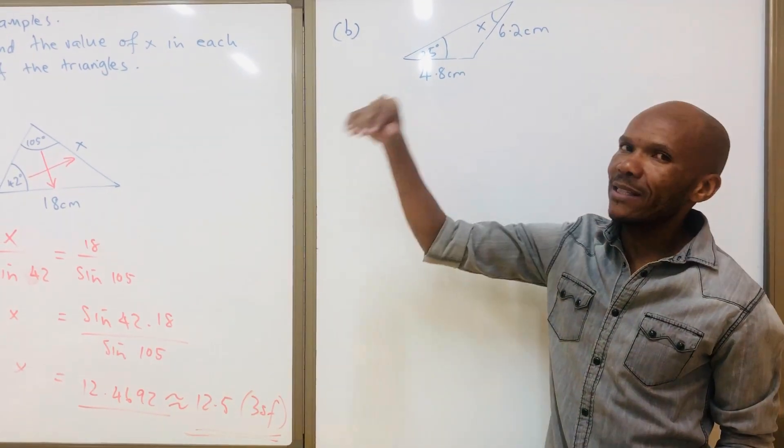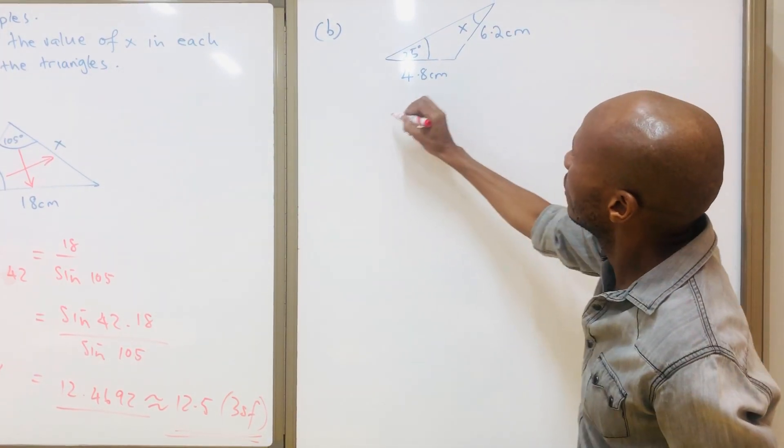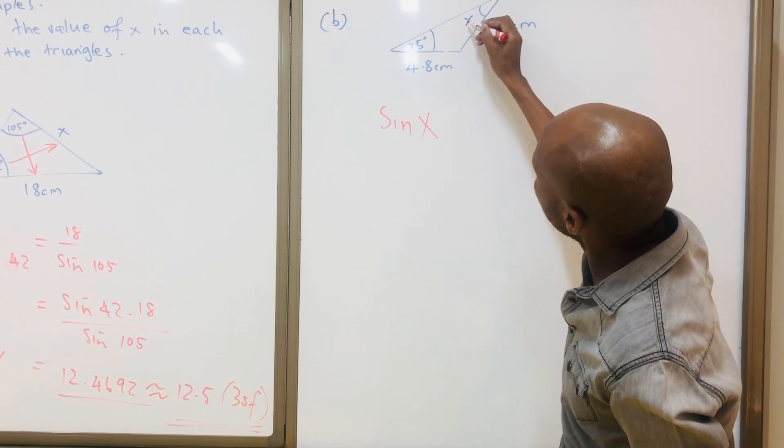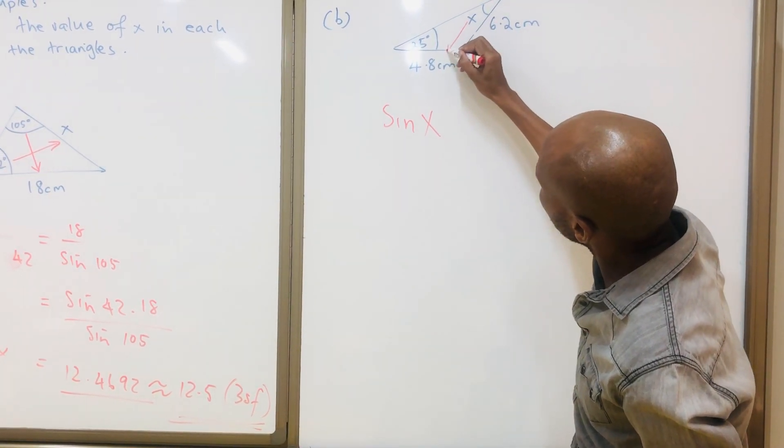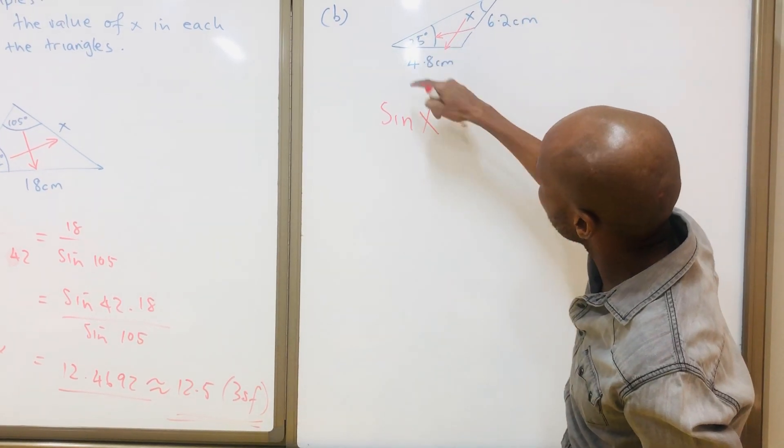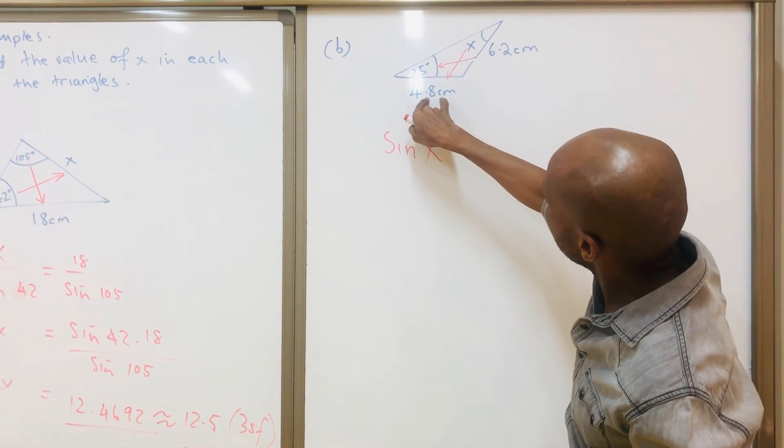How do you put the angle on top when we are using sine rule? We are going to say sine x, but do not forget the crisscross relationship. That means this length has a relationship with the opposite angle.